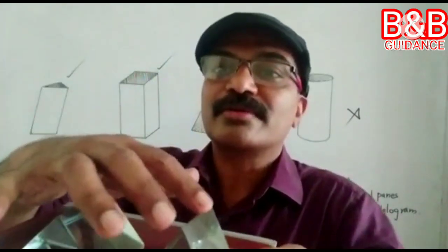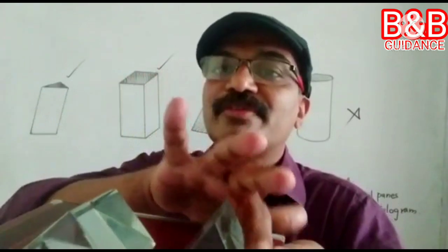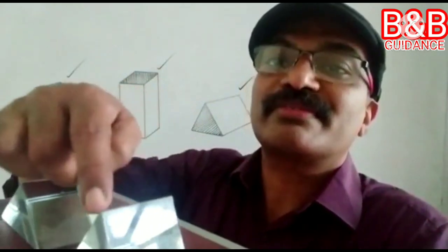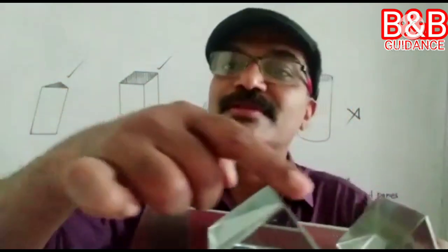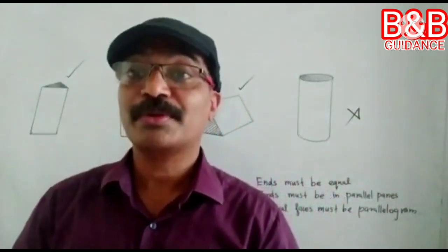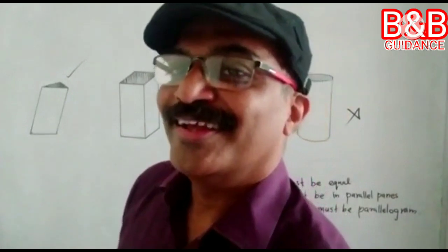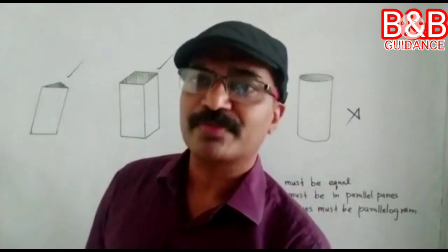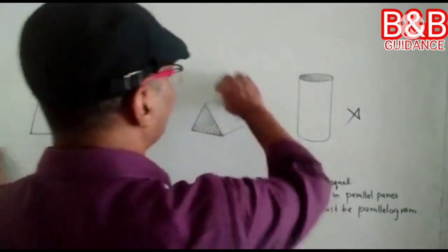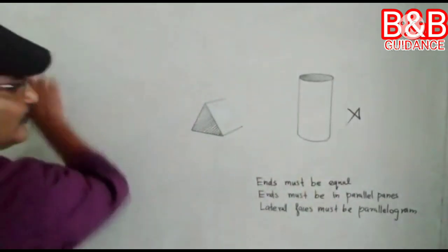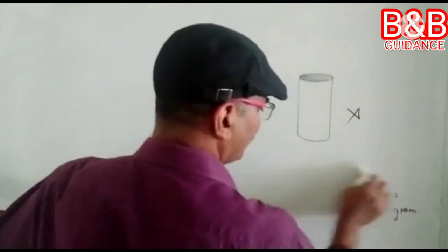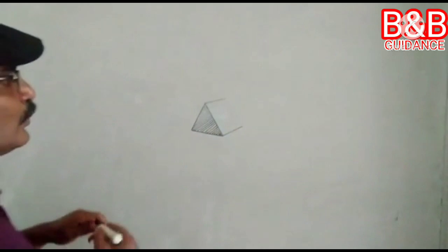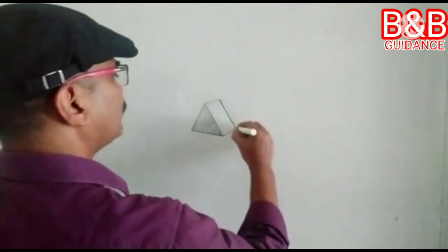What is the angle of prism? It is the angle between the refracting surfaces. The other surface — the one I have kept the book on right now — light is not passing through that surface. That is called the base. This is the base of the prism. And this edge — these are the refracting surfaces — this edge is called the refracting edge.